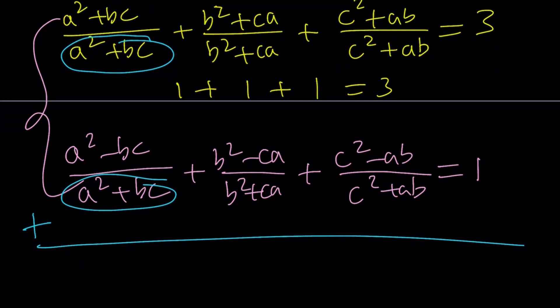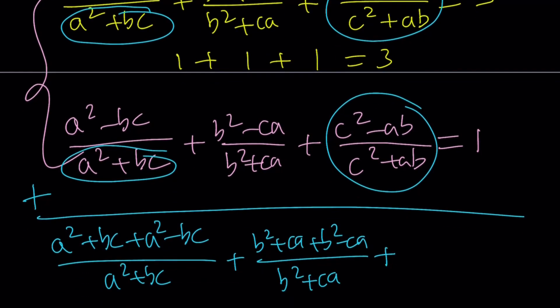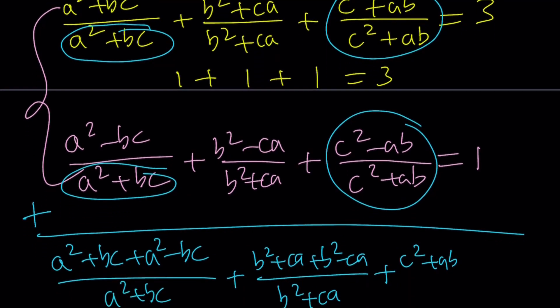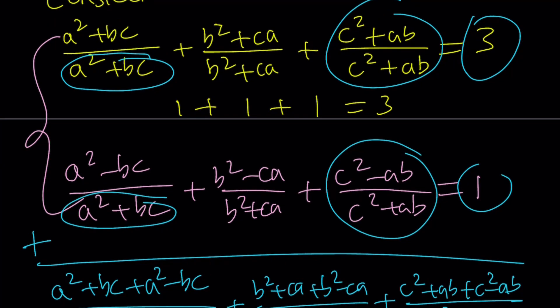For example, for the first one, you're going to get a squared plus bc plus a squared minus bc over the denominator. And then b squared plus ca plus b squared minus ca divided by the common denominator. Plus, I'm looking at the third one, and if you add those, you're going to get c squared plus ab plus c squared minus ab divided by the common denominator c squared plus ab. What is that equal to? 3 plus 1 is equal to 4. So this is equal to 4.